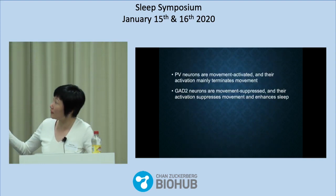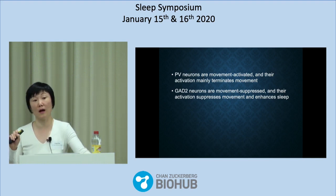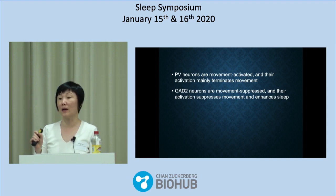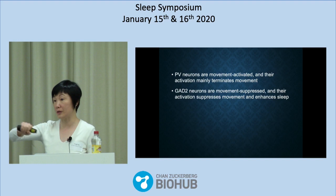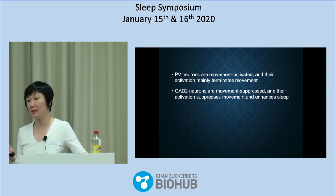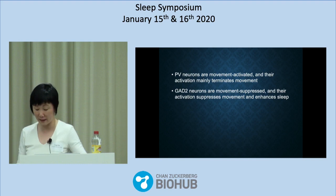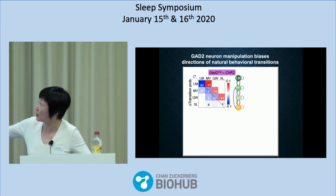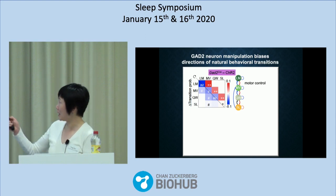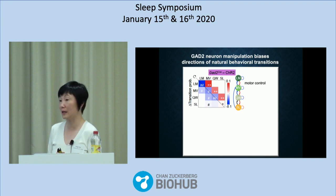In summary: the PV neurons are movement-activated, and their activation may terminate specific movements. We think this is because PV neurons are important for action selection — every particular movement we make also requires suppressing other unintended movements. The GAD2 neurons are different: they generally suppress all movement and enhance sleep. Even though the GAD2 neurons do this, they're not causing any direct movement-to-sleep transitions, which are not observed normally. Instead, they bias the directions of natural transitions.